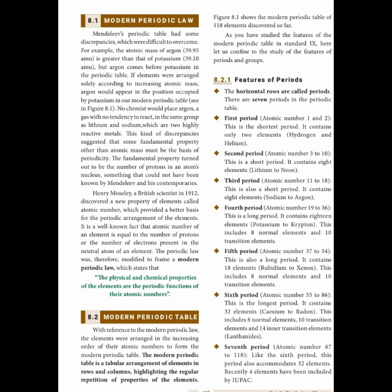The first period contains atomic numbers one and two — only two elements, hydrogen and helium. This is the shortest period. The second period runs from atomic number three to ten and is a short period containing eight elements. The third period is also a short period with eight elements, starting from sodium and ending at argon. The fourth period is a long period containing 18 elements, starting from potassium and ending at krypton, including eight normal elements and ten transition elements.